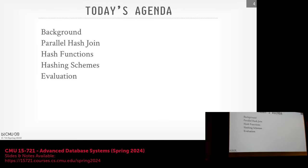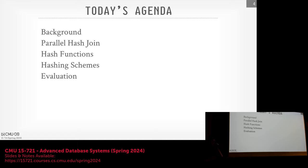Today I want to focus on joins, because joins are one of the most — if not the most — important operators in a relational database system. We're going to focus on how we do this in parallel on a single-node system, assuming something else above us has already moved the data to where it needs to be. What we really care about is: when we get all the data on a single node, assuming everything fits in memory, how can we run as fast as possible?